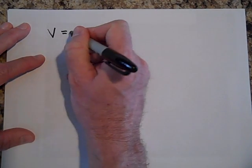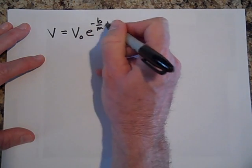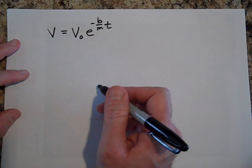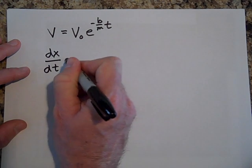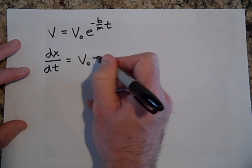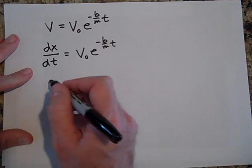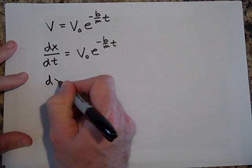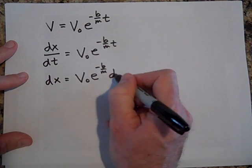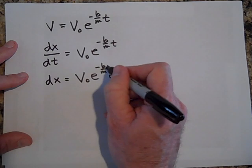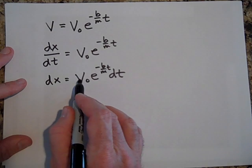If I know that this from the last video is that this is the velocity and I'm trying to get how far that the furthest it's gonna go is, then I'm going to just say that this is dx/dt. That's equal to v naught e^(-b/m times t). And I'm going to bring this dt on the other side. So dx is equal to v naught e^(-b/m times t) dt.